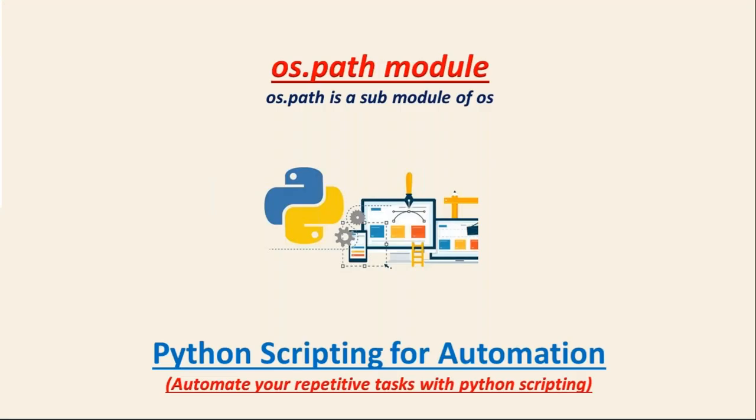This os.path sub-module is used to work on paths - like whether a particular path exists or not, whether that path is a directory or file path, what is the size, when it was created, what is the access time, what is the modified time, and whether it is a soft link or not. So to work with paths, we use the os.path module.